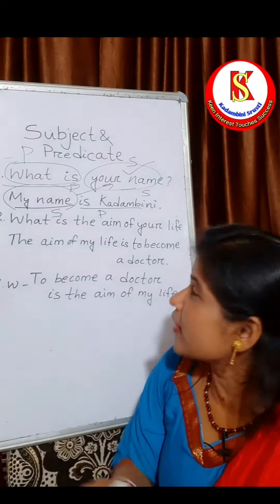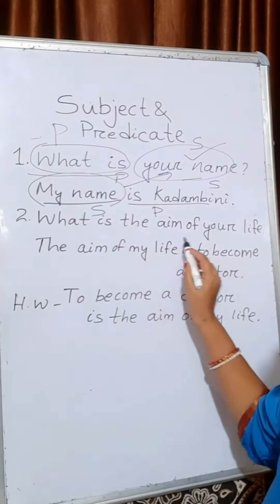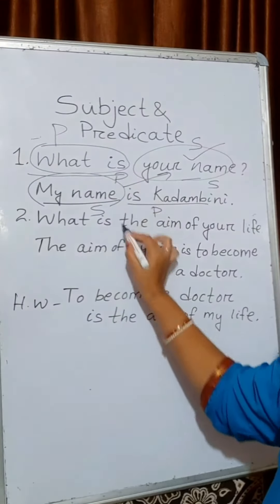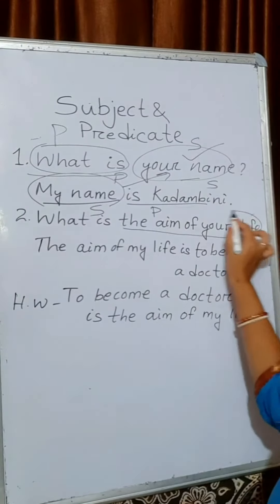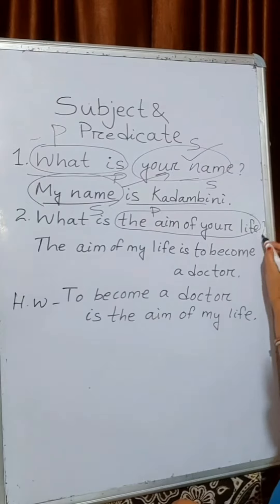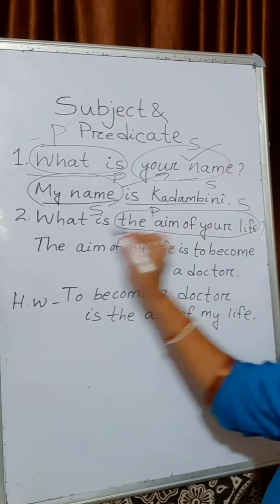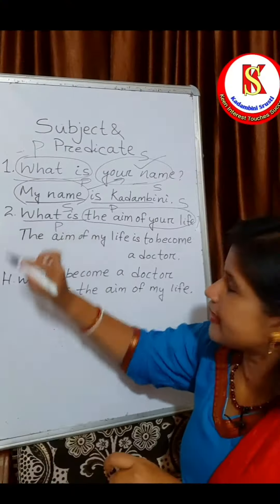Let us move to the second one. The sentence is: What is the aim of your life? It is a question again. So 'the aim of your life' is the subject and 'what' is the predicate.